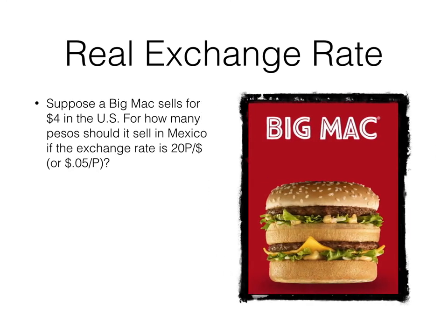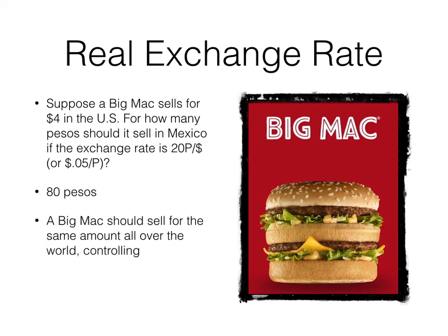Now let's look at the real exchange rate. Suppose a Big Mac sells for $4 in the U.S. For how many pesos should it sell in Mexico if the exchange rate is 20 pesos per dollar? Assuming zero transaction costs and zero information costs — if you live on the border in San Ysidro, California, you can easily go to Mexico to buy a Big Mac. If it sells for anything less than 80 pesos, it's cheaper for an American to go to Mexico. If it's more expensive than 80 pesos, it's the reverse. A Big Mac should sell for the same amount all over the world controlling for the exchange rate. This is called the Big Mac index, put out by The Economist every year, to compare what's called purchasing power parity.